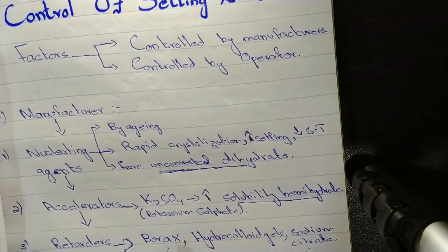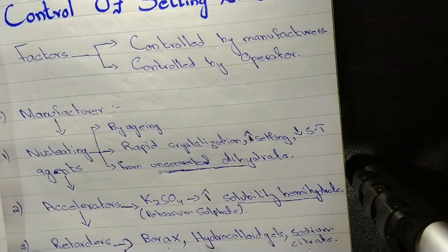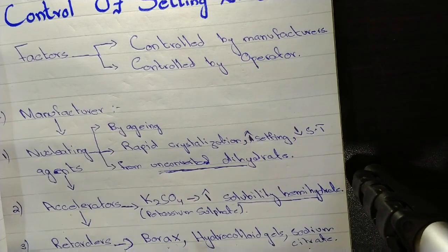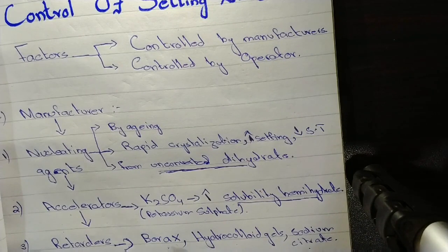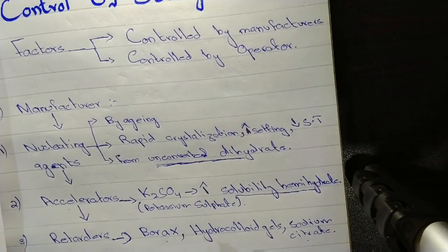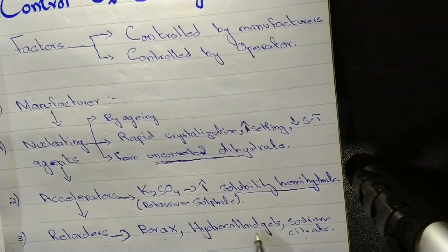Now the retarders. There are three types of retarders: borax, hydrocolloid gels, and sodium citrate. These are also frequently asked in the examination — what type of retarders are used in gypsum products. The mechanism through which they retard the setting is still unknown.